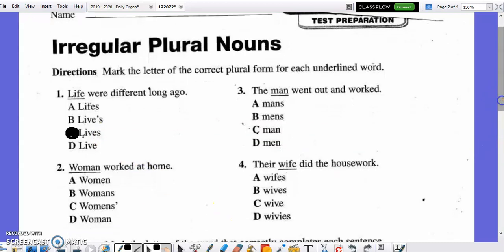Number two, women worked at home. Is it A, woman? B, womans? C, womans with an apostrophe after it? Or D, woman? Mark your response now. The answer is A, the irregular plural for woman, W-O-M-A-N, is women, W-O-M-E-N.